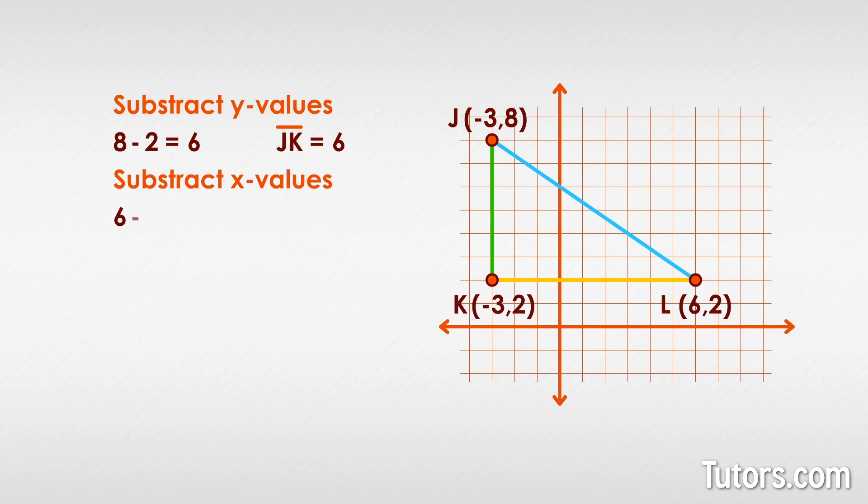Now we have 6 squared plus 9 squared equals c squared. Let's solve for c and see what we get. The answer is c equals 10.816. The length of line segment JL is approximately 10.816 units.